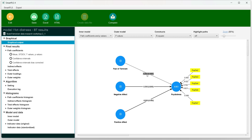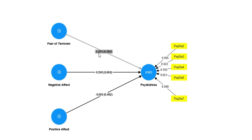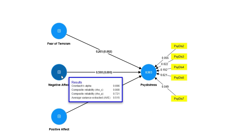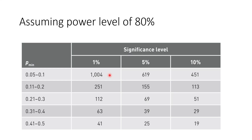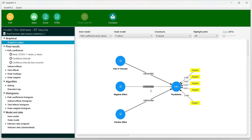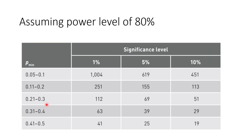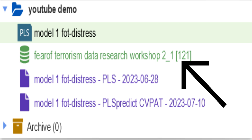In our example, the path coefficient between fear of terrorism and psychological distress is 0.205 (significant), and between negative affect and psychological distress is 0.598 (significant), while 0.026 is not significant. With a sample size of 121, we can expect that path coefficients between 0.21 and 0.3 yield significant results at 1%. So our sample size, with the criteria of 0.21–0.3, is sufficient for this particular dataset.